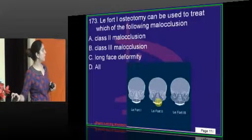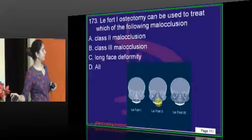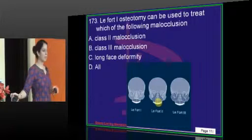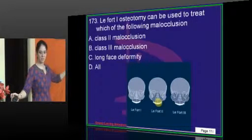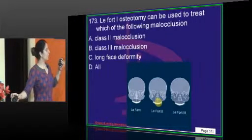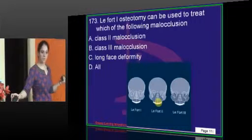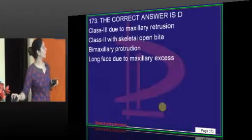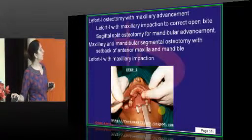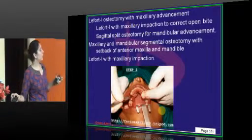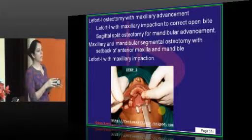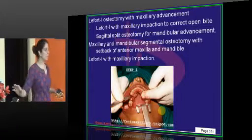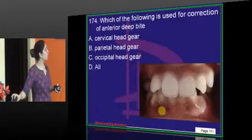Osteotomy can be used to treat Class 2, Class 3, and long-face deformity — essentially all of the above. Le Fort 1 osteotomy can be done with maxillary advancement or mandibular setback depending on what kind of malocclusion is present, and the osteotomy is chosen accordingly.